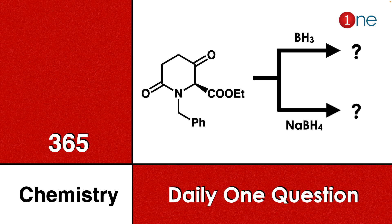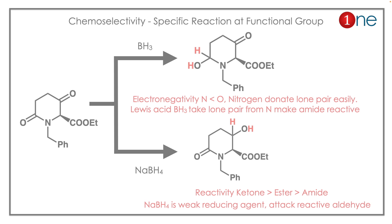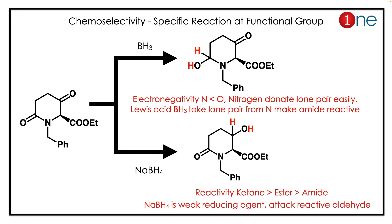Basically, you are working on tunability. The new concept you will learn here is chemoselective — meaning the specific reaction at specific functional groups. Here, BH₃ is being used. BH₃ is a Lewis acid, so it will always attack the electron-rich species.